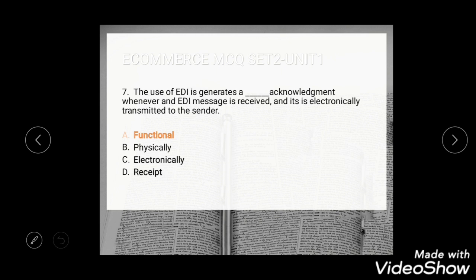Question 6: The use of EDI generates a dash acknowledgement whenever an EDI is received and it is electronically transmitted to the sender. The options are functional, physical, electronically, and received. The correct answer is functional acknowledgement.